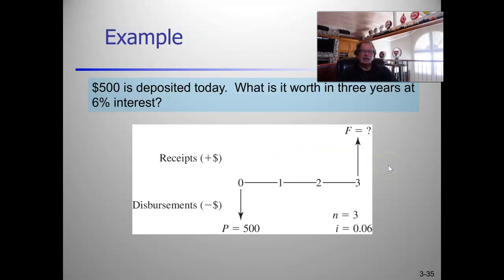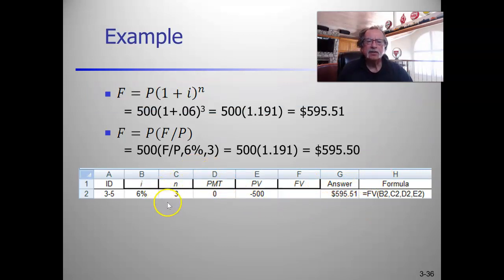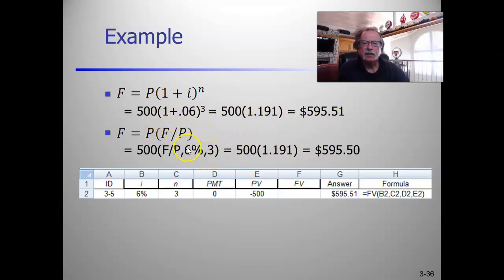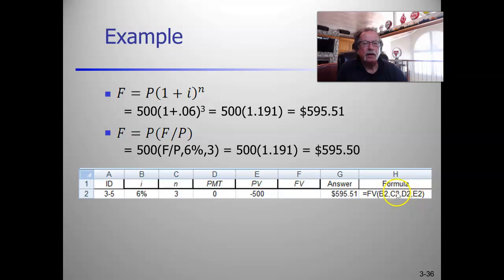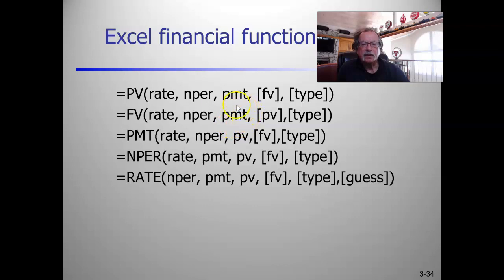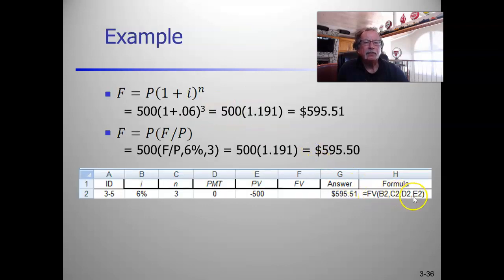Here's what we can do with receipts and disbursements. If we want to know how much we'll have in six years, it's 500 times 1.06 to the third. There are tables in the back of textbooks for the single payment compound amount factor at 6% for three years, or you can use the FV function. Note that you can't ignore the payment argument — you have to put zero in for it explicitly; otherwise Excel assumes the third term is the payment.